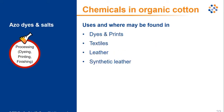Another example is azo dyes, which — as their name indicates — can be found mainly in textiles, leather, and synthetic leather that have been dyed or printed. These substances are classified as CMR: carcinogenic, mutagenic, or toxic for reproduction. In Europe and many other countries — such as Saudi Arabia, China, Russia, and Australia — the use of azo dyes is restricted, and they are also restricted in both organic cotton certifications we mentioned.